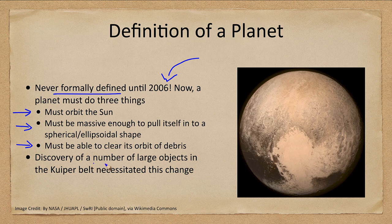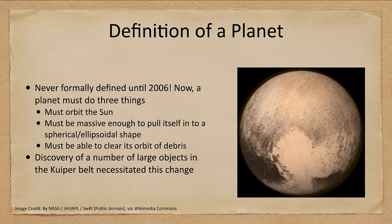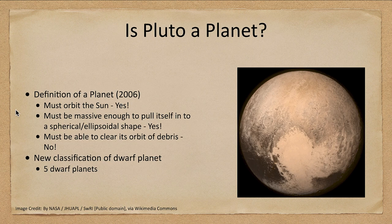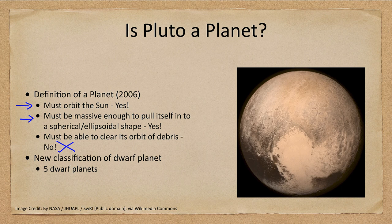What really necessitated this change was that we began discovering a large number of large objects in the Kuiper belt. In the asteroid belt there's only one large object, so it wasn't as big of a deal. However, when we started finding more objects especially those similar in size to Pluto, this started to become a problem. Pluto does orbit the Sun and is massive enough to form a spherical shape, but it does not clear its orbit of debris — it orbits in the Kuiper belt, which has lots of other objects.